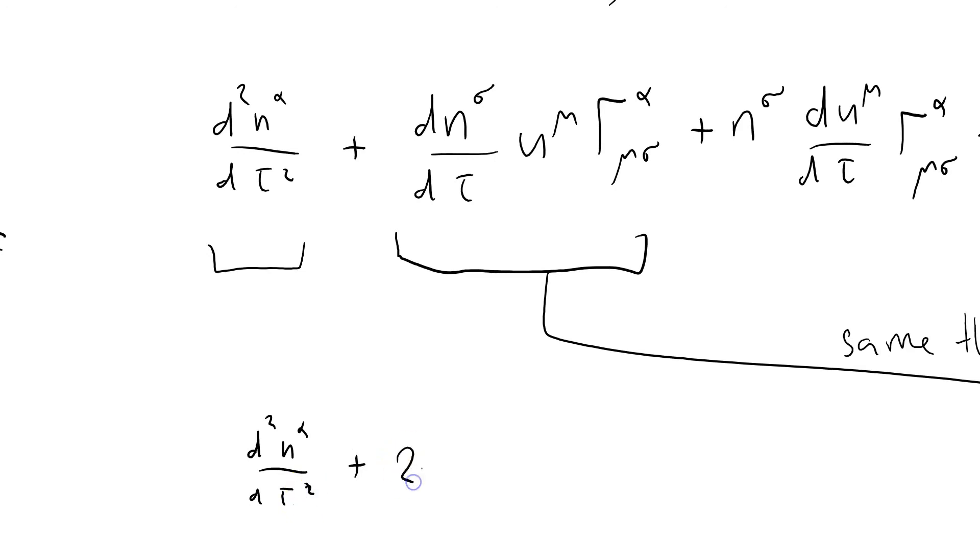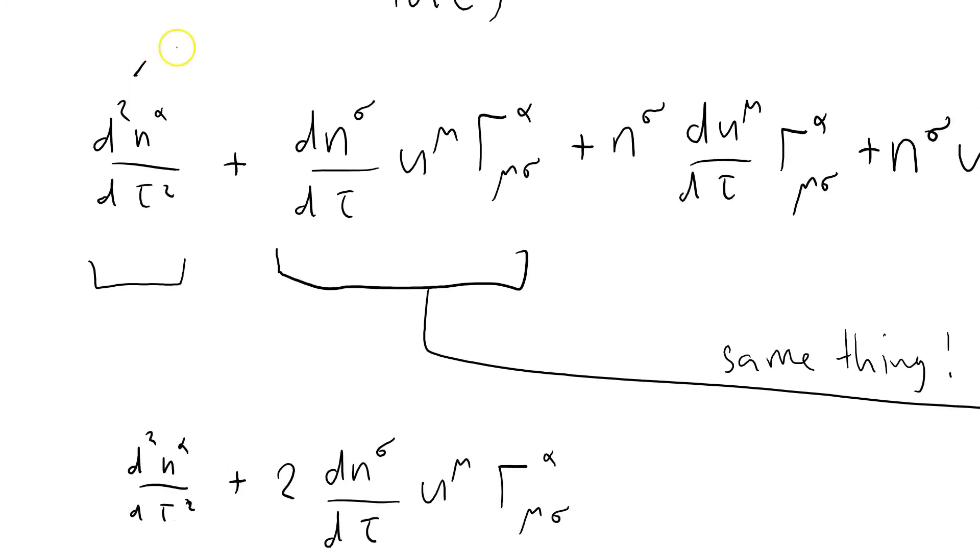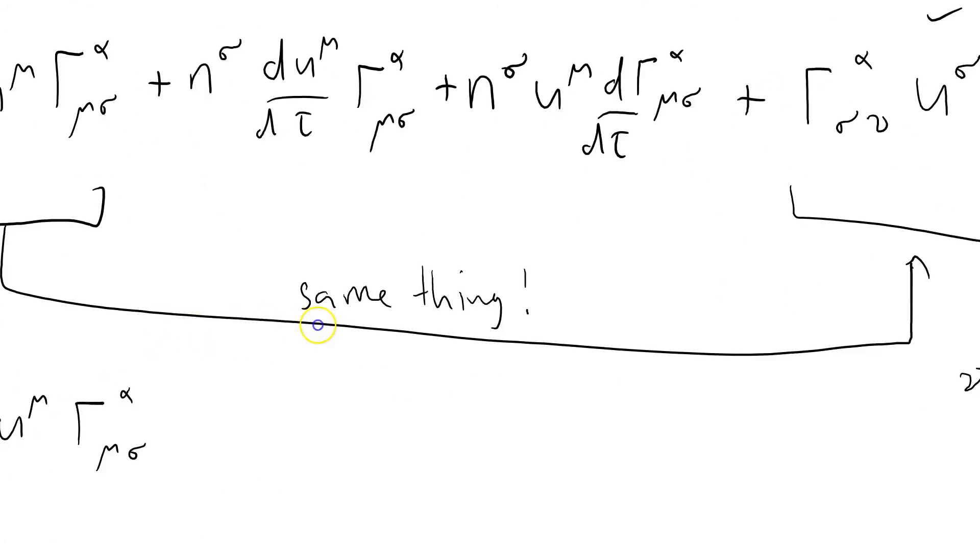We now have d2 n alpha by d tau squared plus two of these things, because the other one was the same: d n sigma by d tau u mu Christoffel alpha mu sigma. Yeah that's right, because the sigma's summing. So I've done that one, I've done this one, I've done this one which matches.